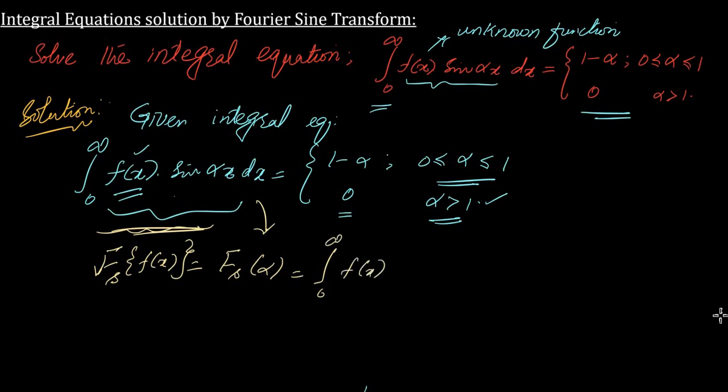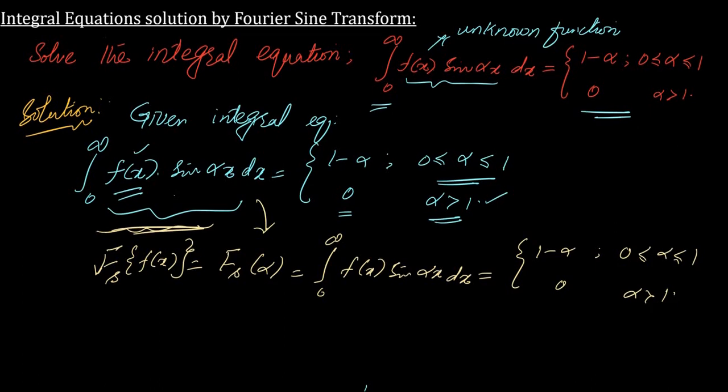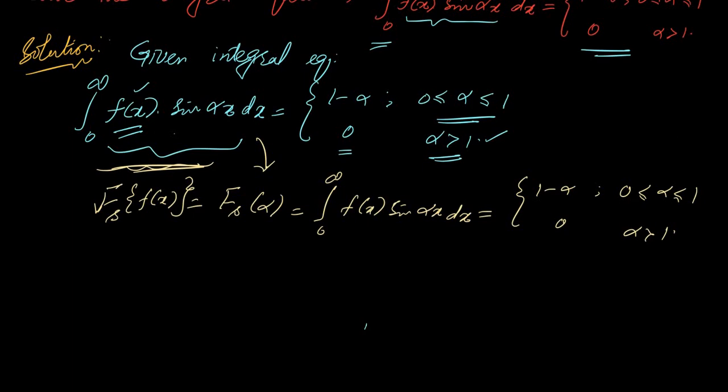This one is defined by this relation in the form of alpha. If this one is defined by this relation, then if this one is Fourier sine transform, it is nothing but equivalent. The value of f(x), the unknown function, can be evaluated by the definition of inverse Fourier sine transform.